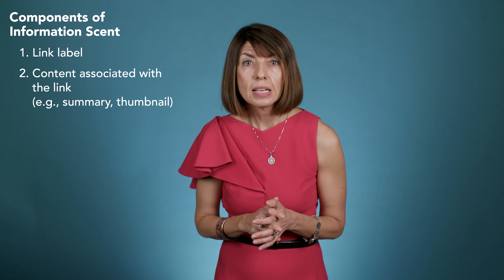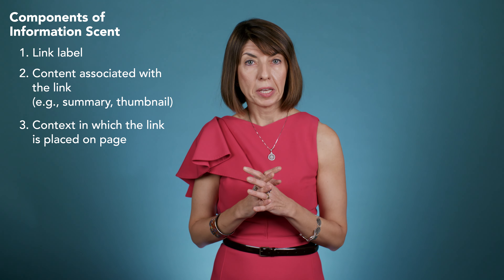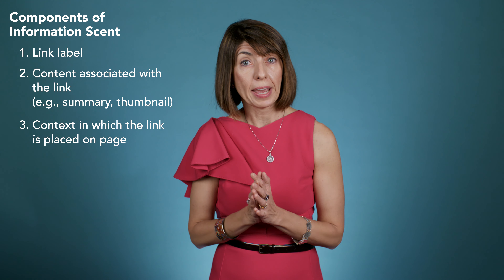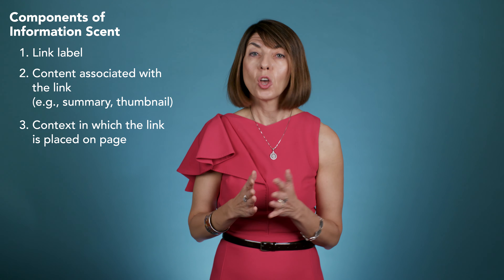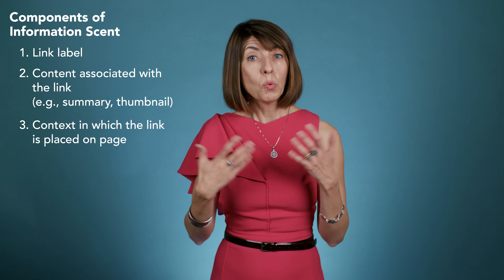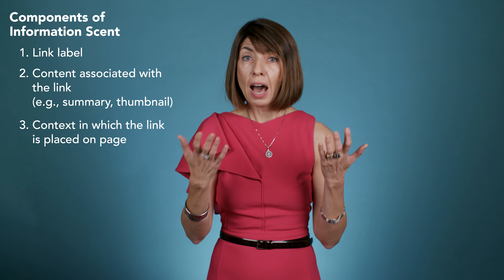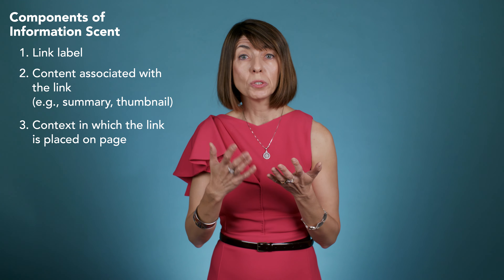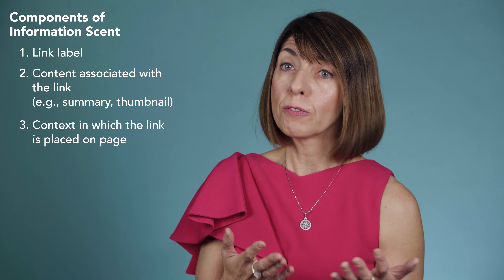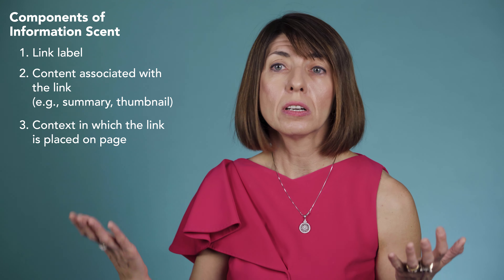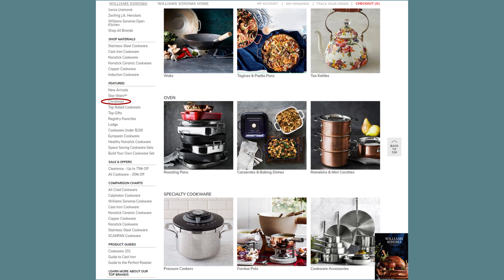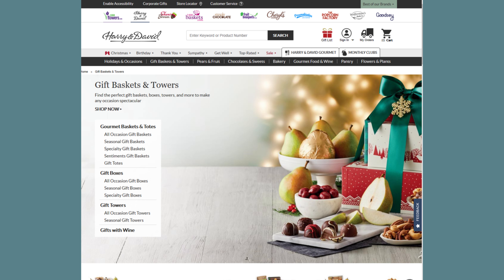The third component is the context in which the link appears — what else is on the page? For example, for the same information need, the word "Christmas" might have different information scent on two different websites. If you're looking for Christmas dinner plates, even if you've never heard of Williams-Sonoma, the scent will be high on its site because of the food-related content also visible on the page. But it will be low on Harry and David's site for the same reason.